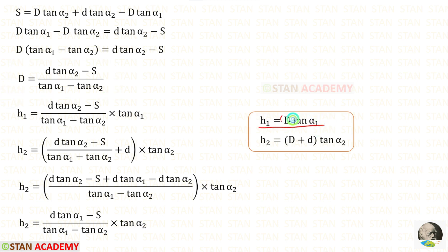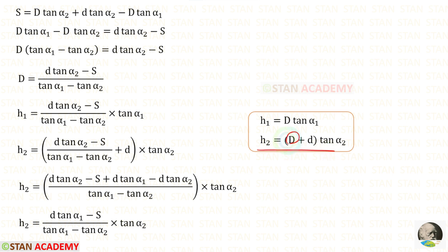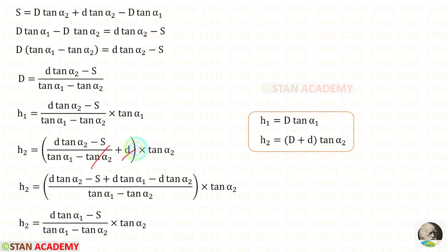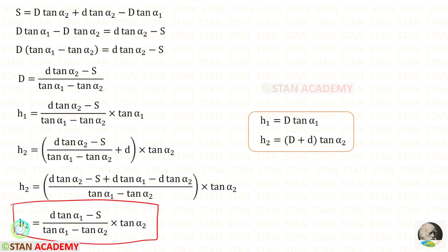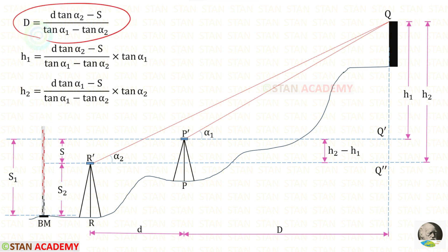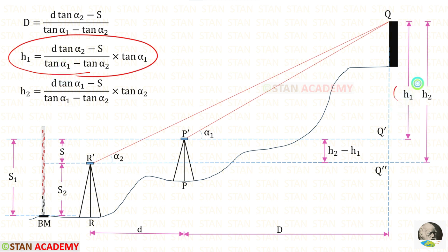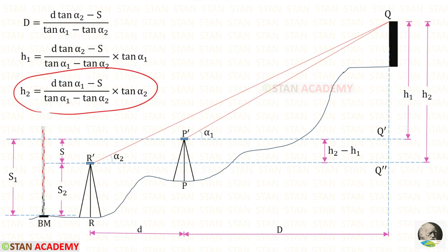Substituting the expression for D back into the H1 formula, we get the expression for H1. Similarly, substituting D into the H2 formula gives the expression for H2. Taking LCM for the two terms and simplifying — eliminating D tan alpha 2 — we get the final expressions for H1 and H2.